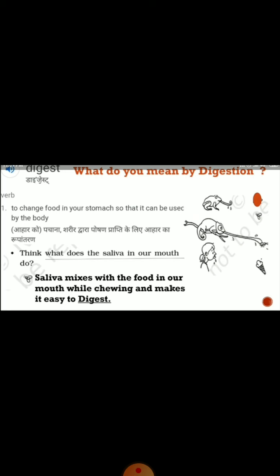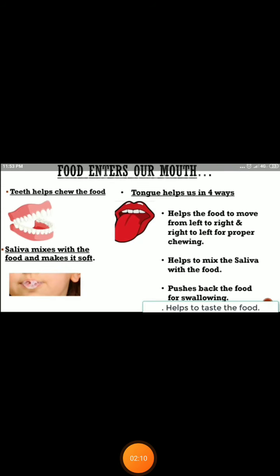You can see here — digestion is the process to change food in your stomach so that it can be used by the body. We call saliva — it helps to make our food soft. We are able to break food and make it small and soft, and then the soft food travels through the food pipe to reach the stomach.